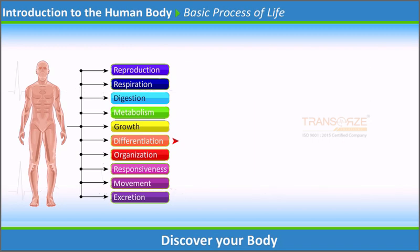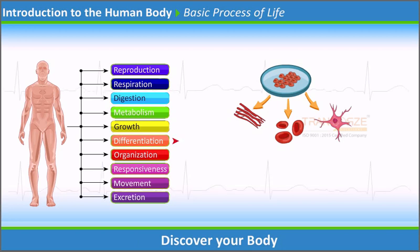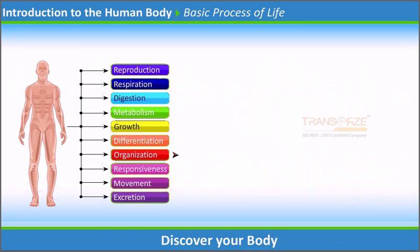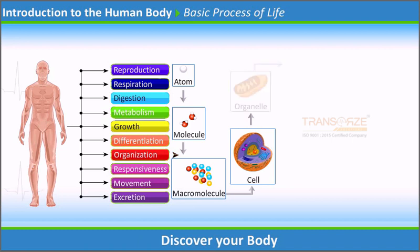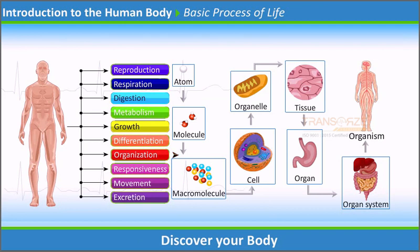Differentiation is a developmental process in which unspecialized cells change into specialized cells with distinctive functional and structural characteristics. It is through this process that cells develop into tissues and organs. Organization: each component of the body has its own job to perform, and these components work together with other components to promote life.